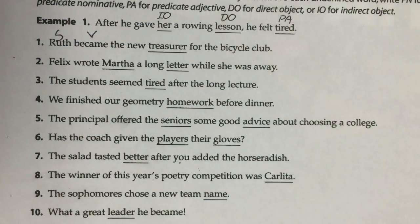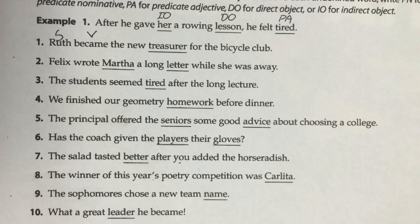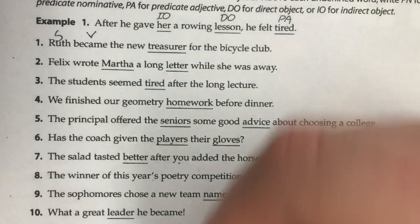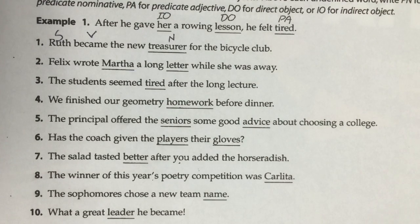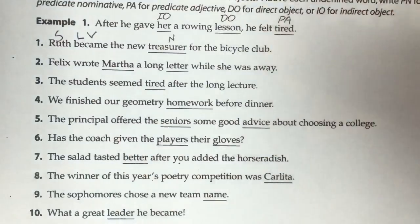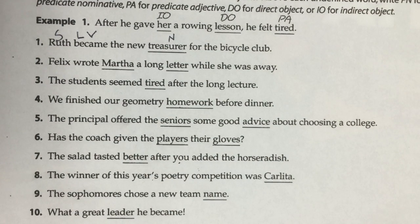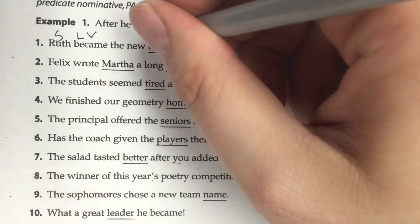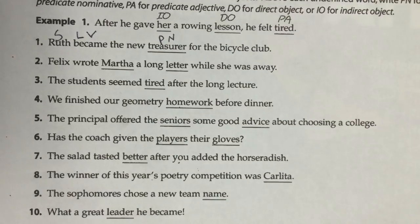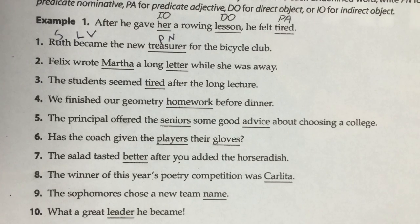Number one: here is our subject, Ruth, and the verb is 'became.' Became is a linking verb because I can replace it with an equal sign — Ruth equals the new treasurer. Treasurer is a noun. After a linking verb, the only thing that can come after is either a predicate nominative or predicate adjective. Because treasurer is a noun, it's a predicate nominative. The N in nominative stands for noun, and the A in predicate adjective stands for adjective.